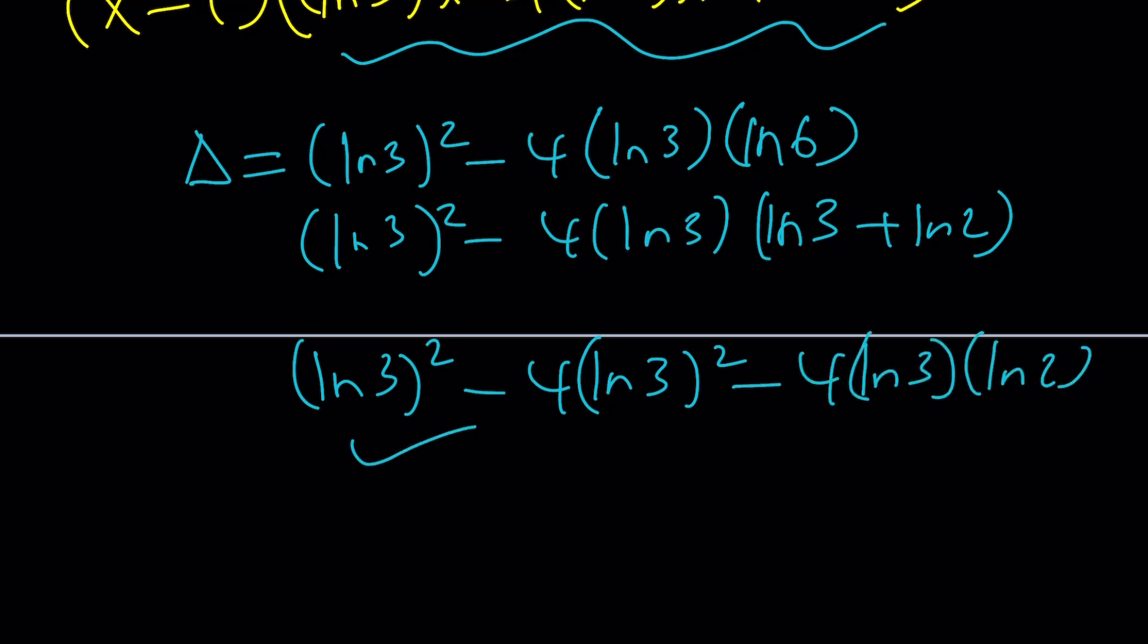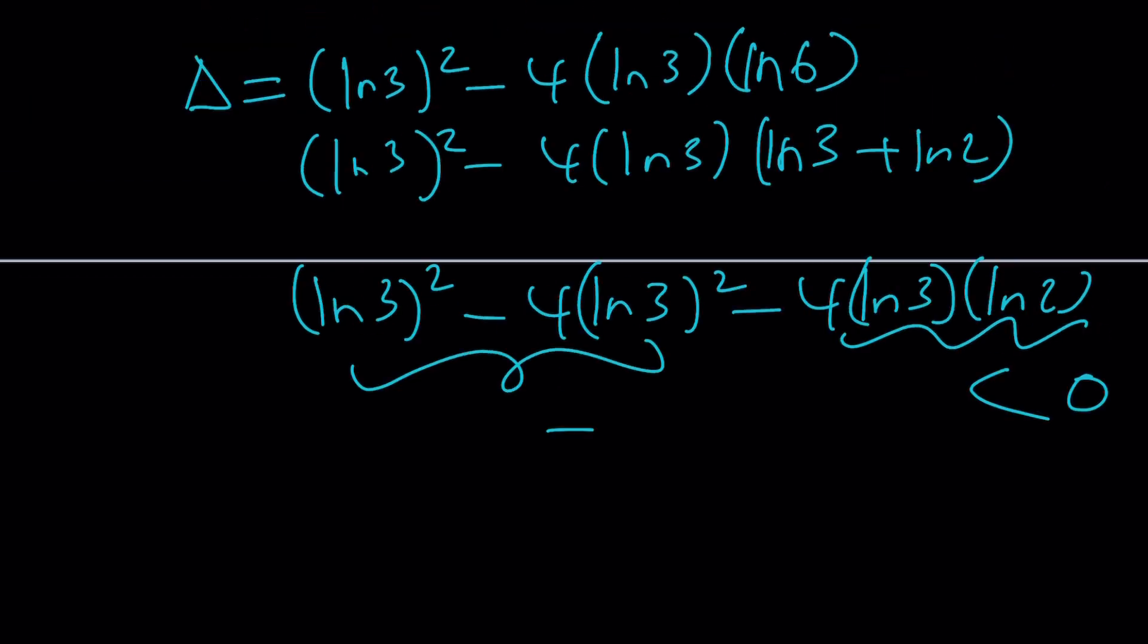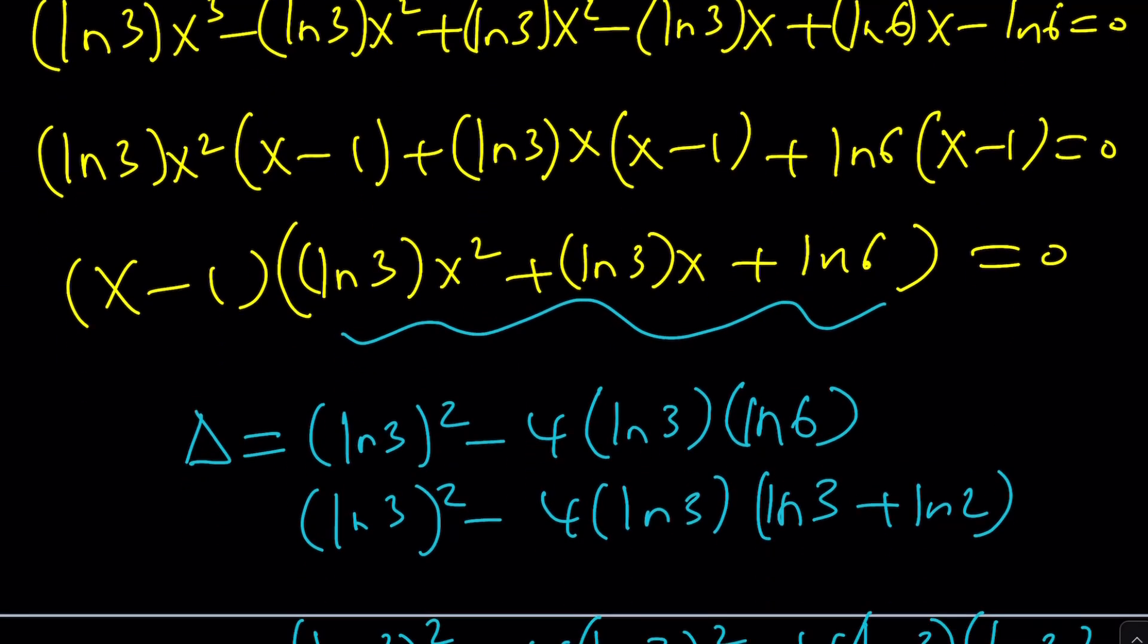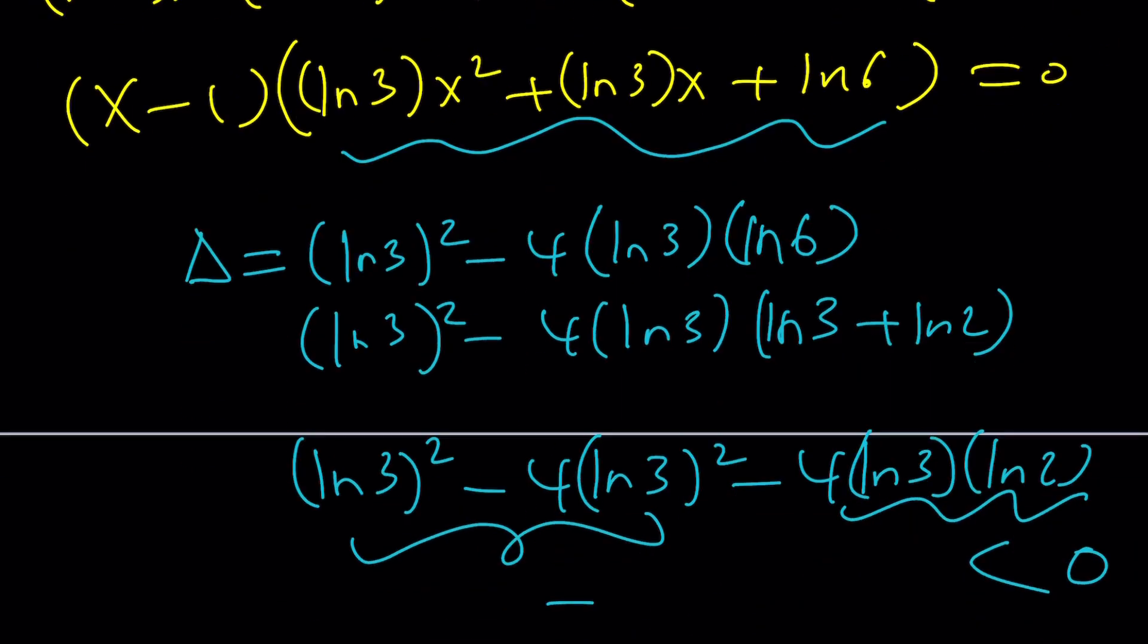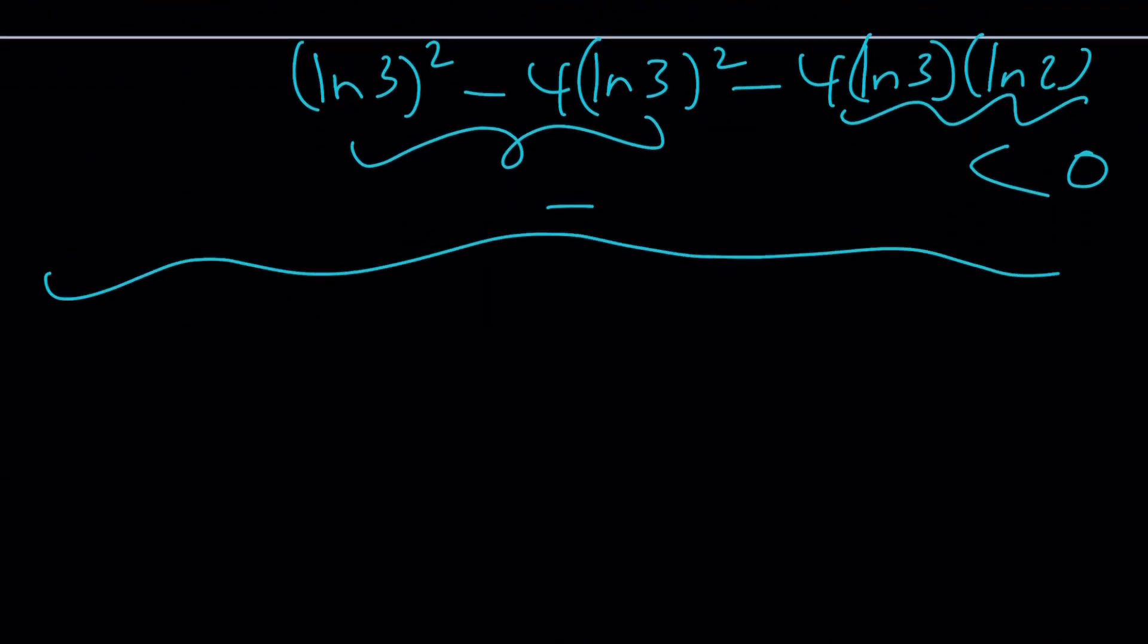Notice that this is negative and you're subtracting a positive term, so this is going to be less than zero, which means there are no real solutions. Could we find them? Yes, use the quadratic formula and evaluate the complex solutions. Left as an exercise. So let's go ahead and take a look at the second method, which is going to be a little bit more fun. I don't know, you'll decide.